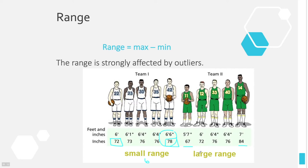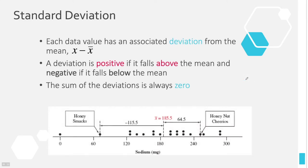And then we have 84 minus 67, which is 17. You may want to check that on your calculator. But look at the difference here — this one is almost three times as much as the other. So Team 1's heights are almost all the same, but Team 2 has a lot more variability. We have some shorter basketball players — 5'7" is pretty short for a basketball player — and 7' is definitely tall even for a basketball player. So there's a lot more variability in Team 2. The range is just the maximum minus the minimum.